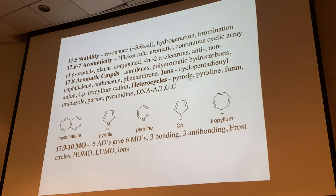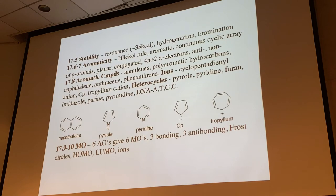Aromatic ions include the cyclopentadienyl anion and tropylium cation, but they must fit the Hückel 4n+2, flat, conjugated rule. Heterocycles are also aromatic - pyrrole, pyridine, furan, imidazole, purine, and pyrimidine. Purine and pyrimidine are the bases in DNA (A, T, G, C), which is part of why this topic is biologically important. To fully understand the 4n+2 rule we need MO theory: six atomic orbitals give six molecular orbitals, three bonding and three antibonding.